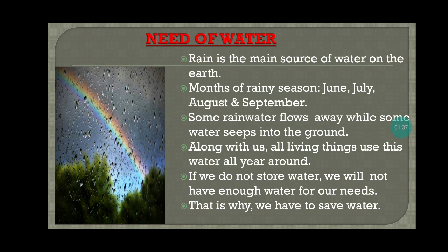Let's move to the next topic: storage of water. Rain is the main source of water on the earth. Months of rainy season are June, July, August and September. Some rainwater flows away while some water seeps into the ground. Along with us, all living things use this water all year around. If we do not store water, we will not have enough water for our needs. That's why we have to save water.